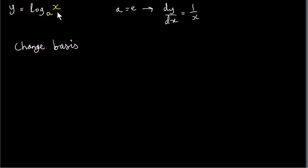How do we change this to base e? We use the fact that log to the base a of x is log to the base e of the argument, which is x, divided by log to the base e of this subscript a.